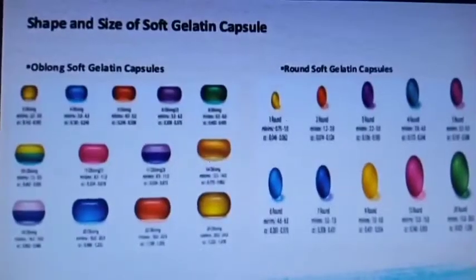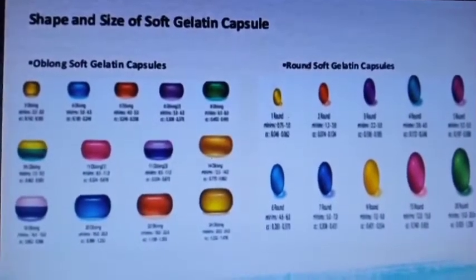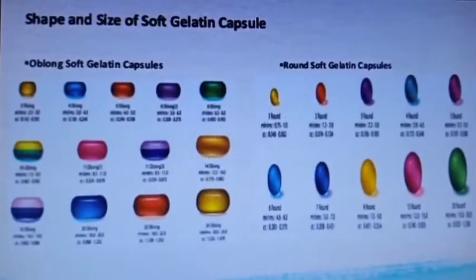So what are soft gelatin capsules? Soft gelatin capsules are one-part hermetically sealed soft gelatin shells containing a liquid, or a suspension, or a semi-solid paste. We all know there are different types of shapes and sizes of soft gelatin capsules available in the market. Here we can see different types, shapes, and sizes of soft gelatin capsules.